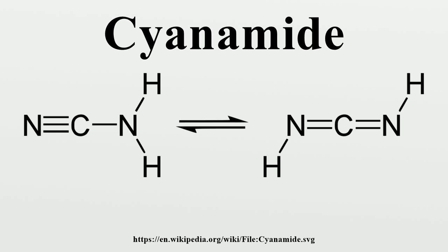Tautomers and self-condensations: containing both a nucleophilic and electrophilic site within the same molecule, cyanamide undergoes various reactions with itself. Cyanamide exists as two tautomers — one with the connectivity N≡C-NH2 and the other with the formula HN=C=NH. The N≡C-NH2 form dominates, but in a few reactions the diamide form appears to be important.